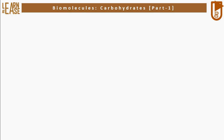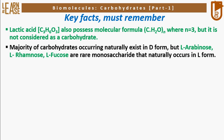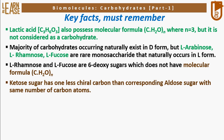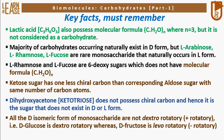Some key facts to remember regarding monosaccharides: Lactic acid C3H6O3 also possesses the molecular formula C(H2O)n where N=3, but it is not considered a carbohydrate. Majority of naturally occurring carbohydrates exist in D-form, but L-arabinose, L-rhamnose, and L-fucose are rare monosaccharides that naturally occur in L-form; L-rhamnose and L-fucose are 6-deoxy sugars which do not have molecular formula C(H2O)n. Ketose sugar has one less chiral carbon than the corresponding aldose with the same number of carbons. Dihydroxyacetone, a ketotriose, does not possess a chiral carbon and is the only sugar that does not exist in D or L form. Not all D-isomeric monosaccharides are dextrorotatory — for example, D-glucose is dextrorotatory whereas D-fructose is levorotatory.